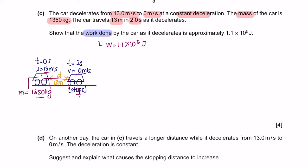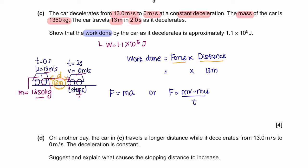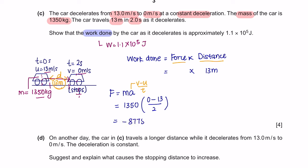We have distance = 13 meters, but we need force first. Force can be calculated using F=ma or change in momentum over time. Using F=ma: mass is 1350 kg and acceleration is (0 − 13) ÷ 2 seconds. The force is −8,775 N; we ignore the negative as it indicates direction. Substituting into work done gives 114,075 J, which in standard form is 1.1×10⁵ joules.